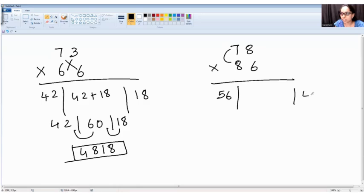7 into 6 is 42 plus 64. 8 into 8 is 64. So it is 56 and then it is 106 and it is 48.